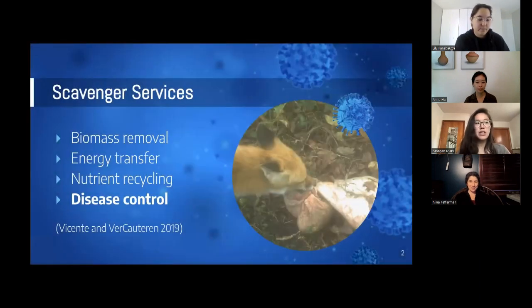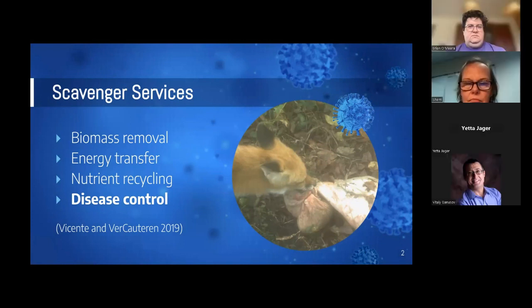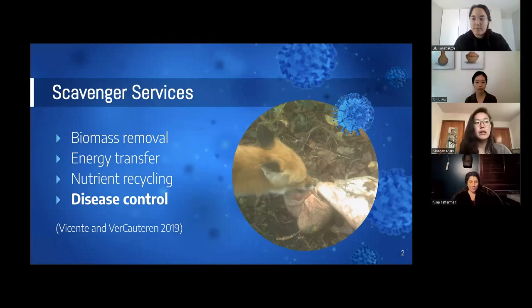We typically think about scavengers as providing important ecosystem services, right? They're nature's cleanup crew. So they remove that decaying matter that can potentially infect other animals. In doing so, they help manage the spread of disease. Scavengers often have strong immune systems and stomach acid that neutralizes pathogens and reduces the likelihood of infection. But what happens when those defenses aren't sufficient and scavengers are also susceptible to a pathogen that can be found on a carcass?